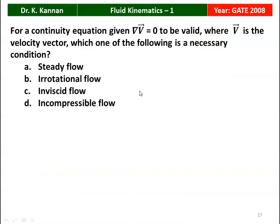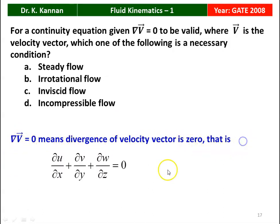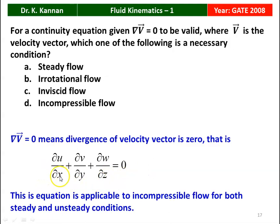Next question from the 2008 question paper. For the continuity equation del·V vector = 0 to be valid, which one of the following is a necessary condition? It should be steady flow, irrotational flow, inviscid flow, or incompressible flow. del·V = 0 means divergence of velocity equals dou u/dou x + dou v/dou y + dou w/dou z = 0, which is applicable for incompressible flow for both steady and unsteady conditions. The correct answer is option D — incompressible flow.